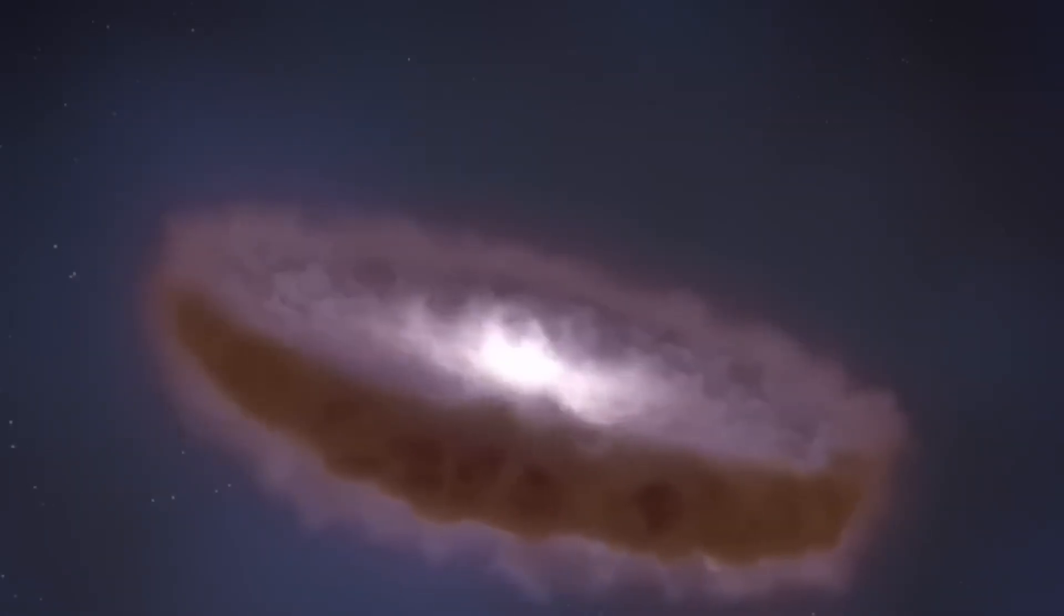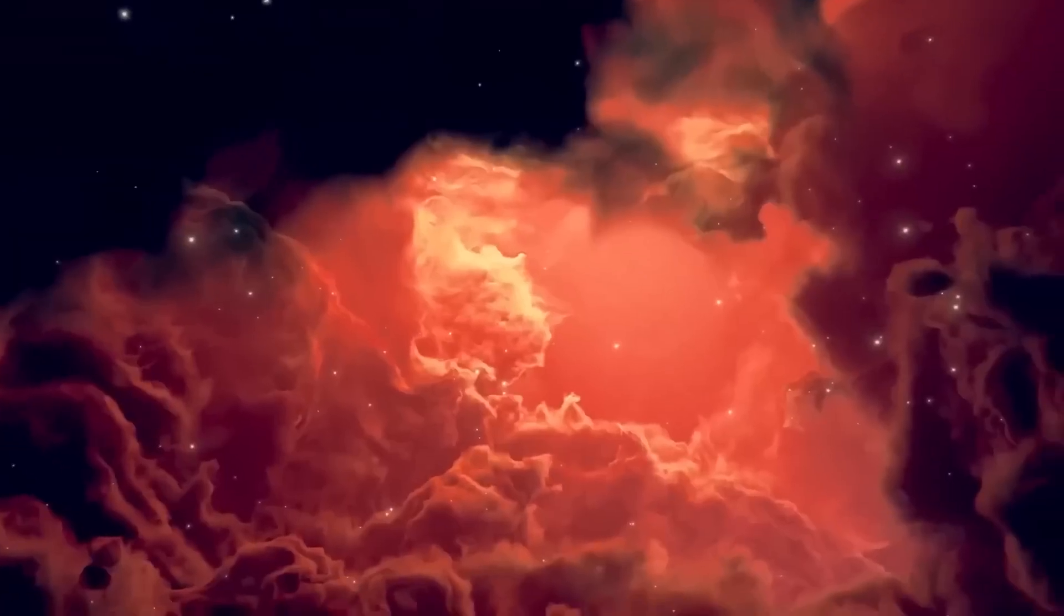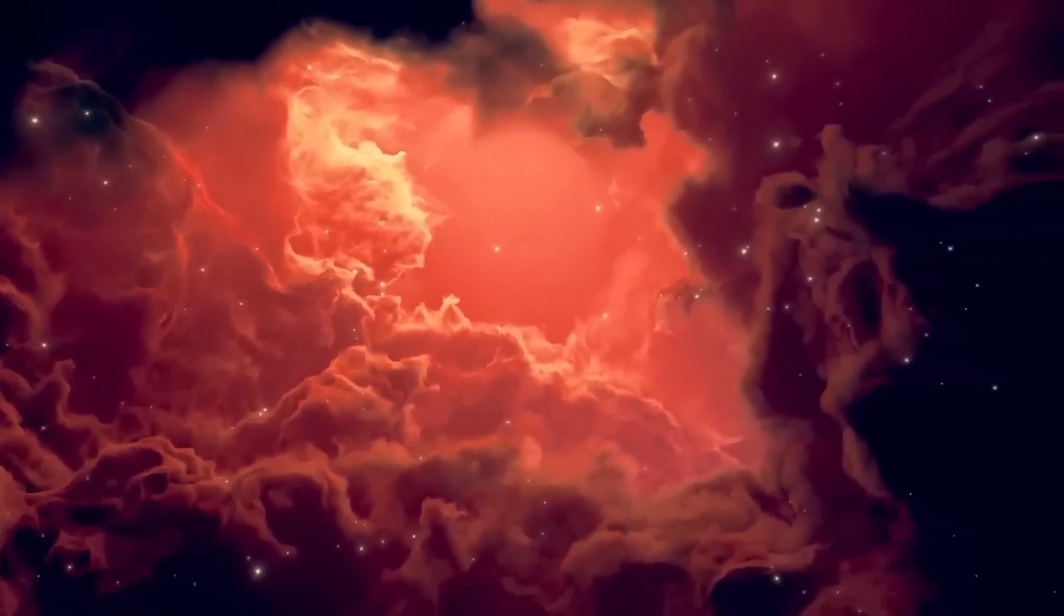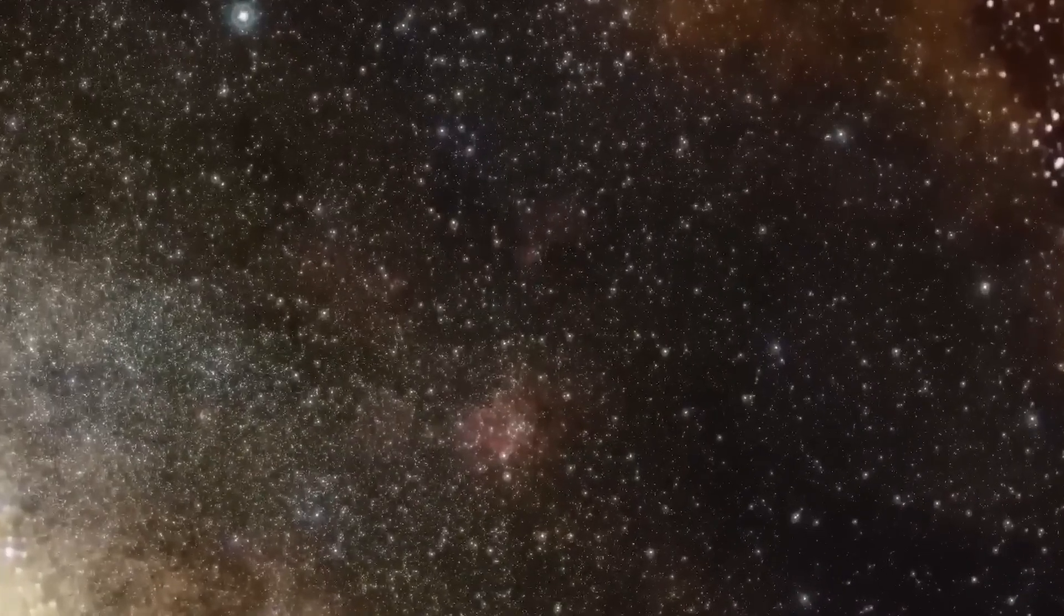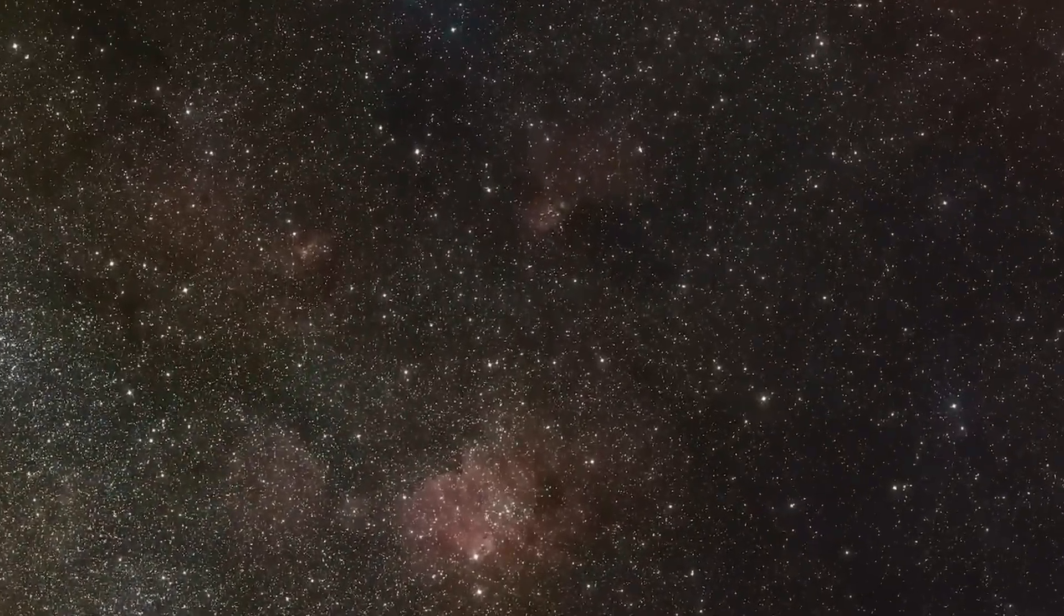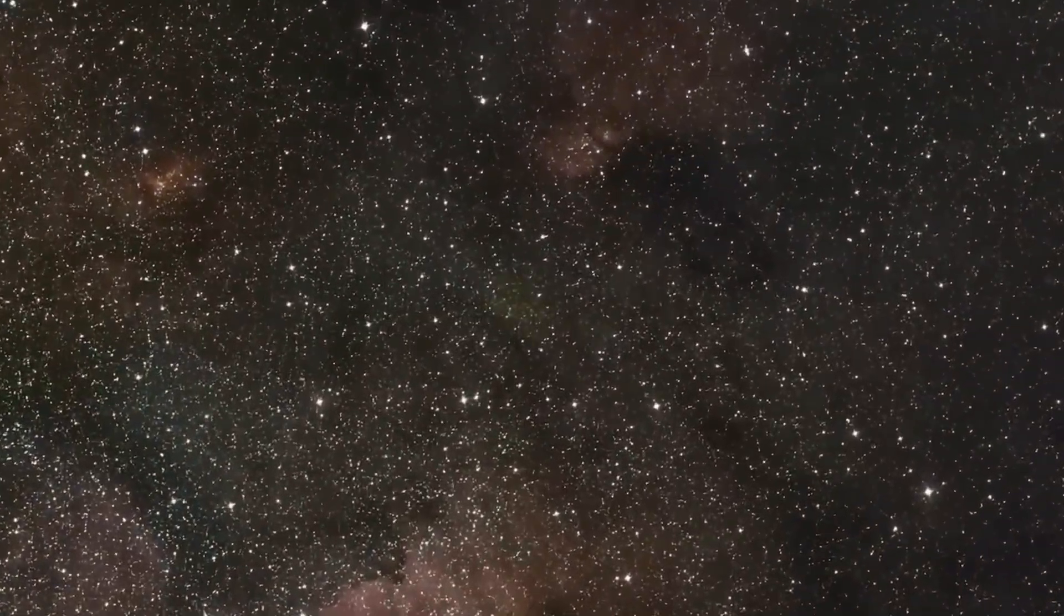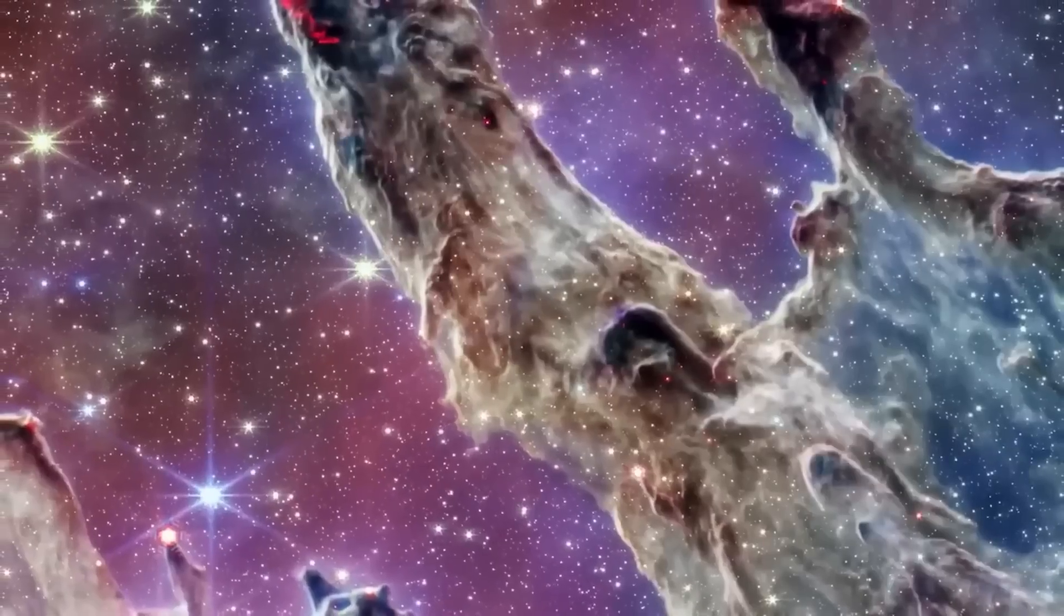The Milky Way contains approximately 300 billion stars, each likely accompanied by its own planetary system. The closest star system to us, Alpha Centauri, is 4.3 light-years away. Even traveling at the speed of light, it would take over four years to get there.